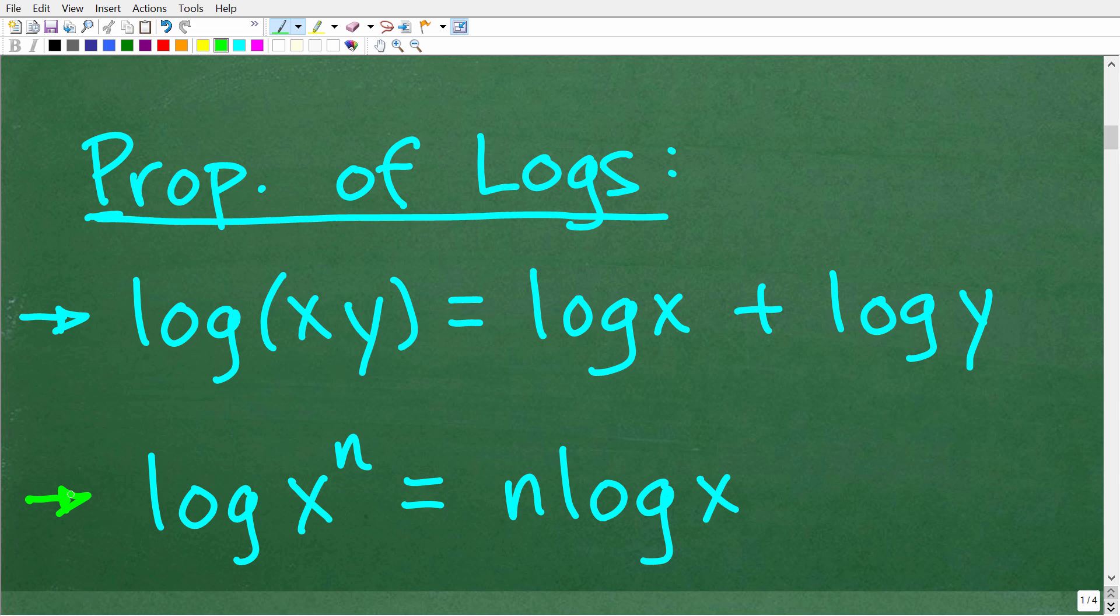Now, the second property we need to understand is the power property. So that is the logarithm of a power. So log x to the n power is equal to n times log x. So again, here is our logarithmic expression. If we want to expand it, we would write it this way. If we had n log x, we would condense it by writing it this way. All right, so really what's going on here is that this exponent n drops in front of this logarithm. Now, this is a product. This is n times log x, and this is equal to log x to the n power.